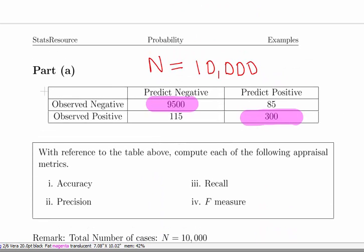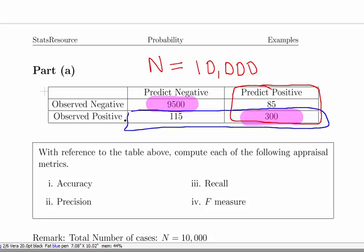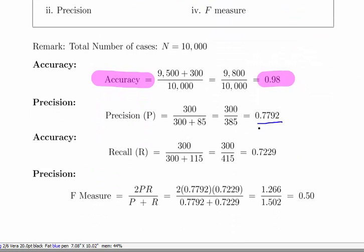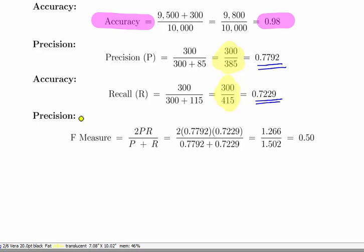For precision, we have 300 correct outcomes out of 385. From the point of view of recall, we have observed 415 cases that should be positive, but only 300 of them were correctly identified as positive. That's precision and recall: 0.7792 and 0.7229. 300 out of 385, 300 out of 415. Those are the two values we get.